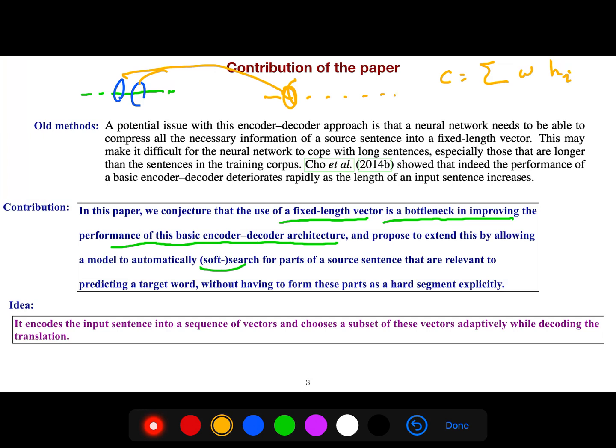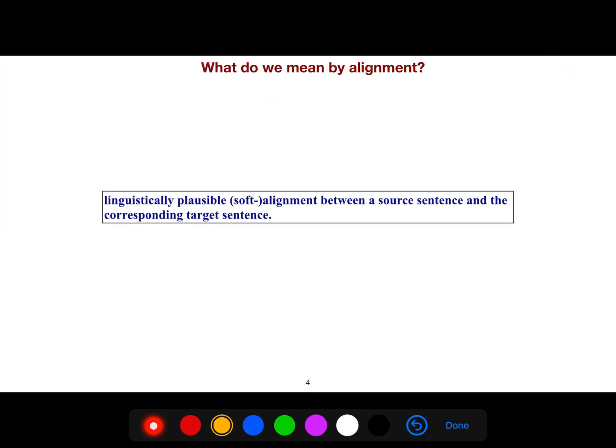Because the old ideas of these machine translation methods were based on this encoder-decoder, but we had a fixed-length vector that represents all of this information. It was really challenging at those times. But now we understood that we can define this concept and we align them. So linguistically plausible soft alignment between a source sentence and the corresponding target sentence.